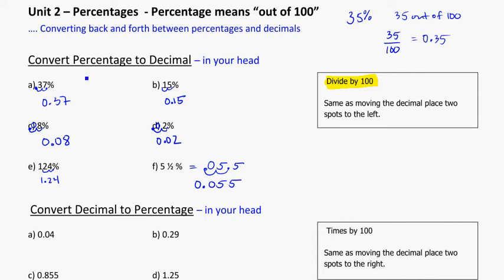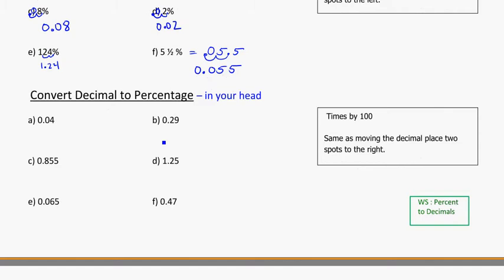So in the previous video, we would have been looking at converting percentage to decimal. And the idea there was to divide by 100, so you end up moving the decimal spot two spots to the left. What we're going to look at now is the other way around, converting a decimal to a percentage. And again, in your head.